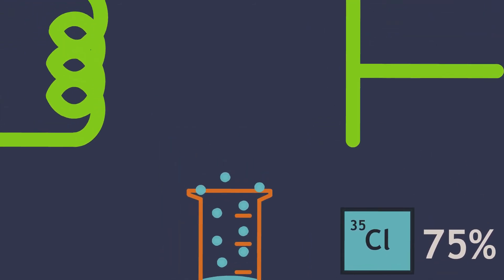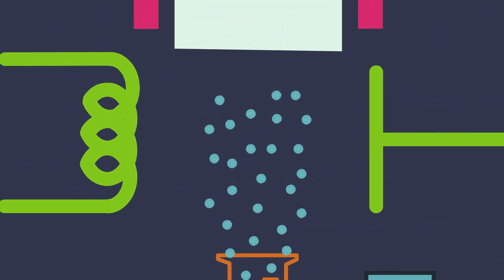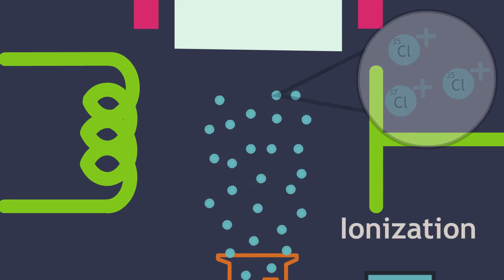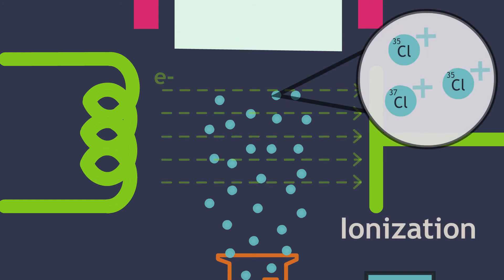First, the sample will be vaporized. The resulting gas will be bombarded with electron beams, pulling away its electrons and creating positive ions. This process is called ionization. The ions will retain the mass of their parent molecules, either 35 or 37 Dalton, but have the same charge.